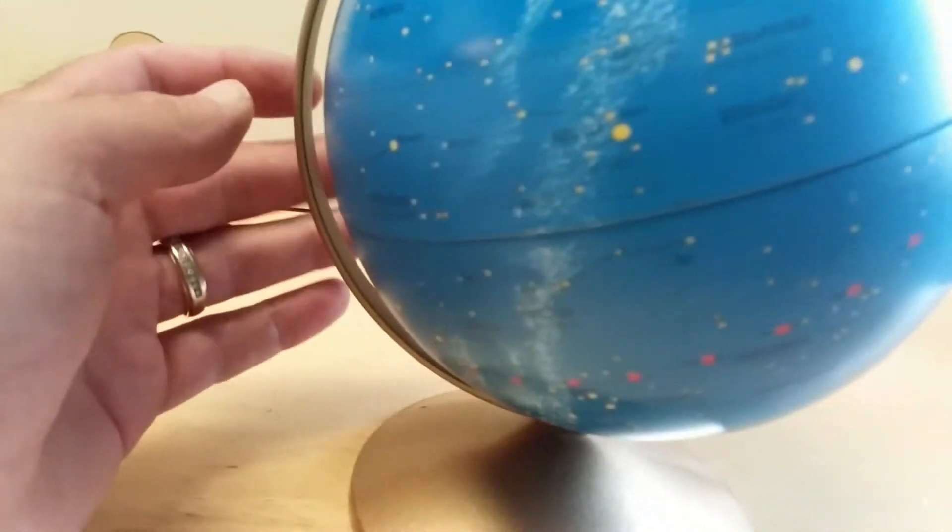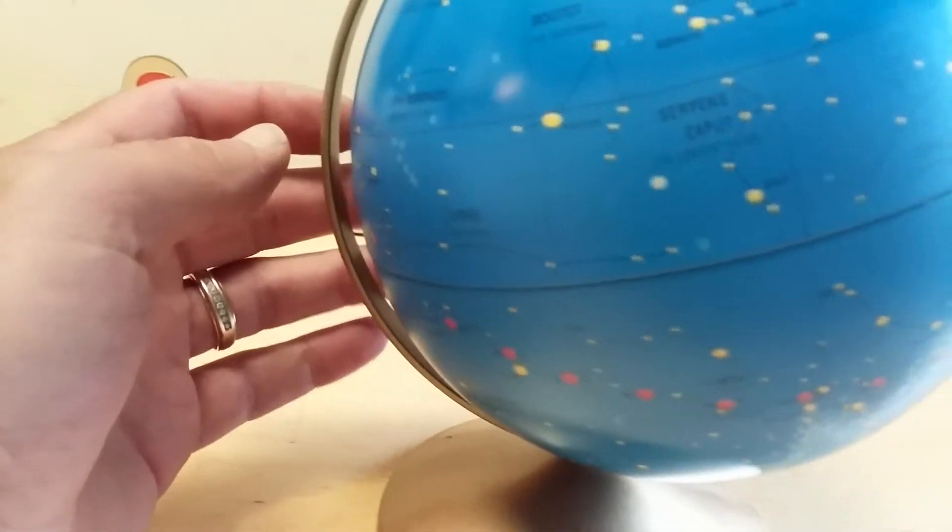It's about 6 inches, I believe. I'll have to measure it. I'm not certain. I don't have a tape measure handy. Where's the Replogle label? There it is. Replogle Celestial Globe.